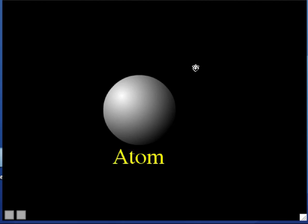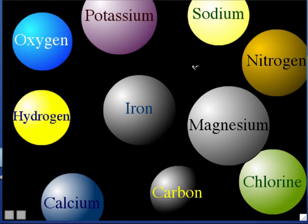Atoms are round and extremely small. One last thing I want you to know is that there are different types of atoms. Since I was talking about an iron nail, it's made out of iron atoms. But there are many other types: sodium atoms, carbon atoms, oxygen atoms, hydrogen atoms, just to name a few. There are over 100 types of atoms, and they are listed on what's called the periodic table of elements.